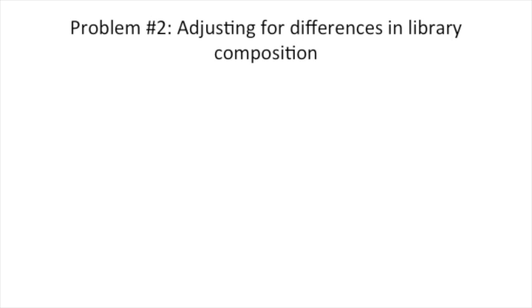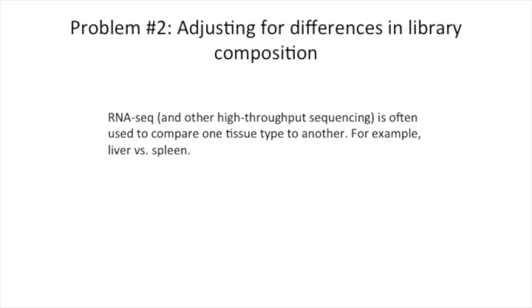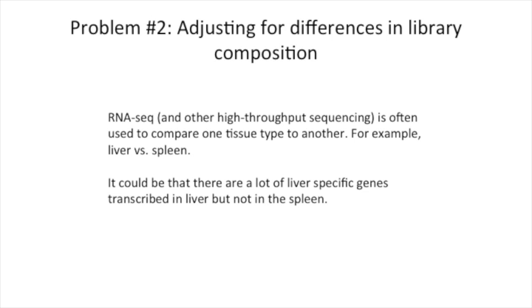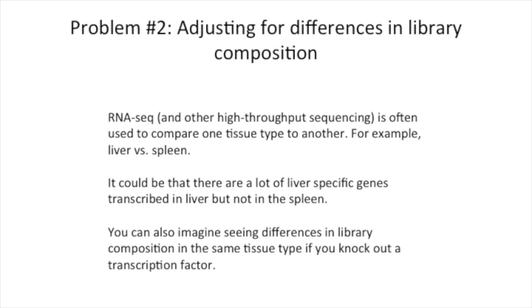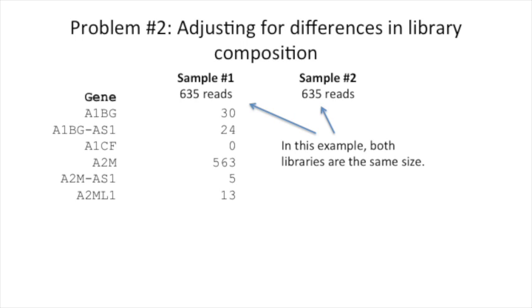Problem number two: adjusting for differences in library composition. RNA-seq, and other high-throughput sequencing, is often used to compare one tissue type to another, for example, liver versus spleen. It could be that there are a lot of liver-specific genes transcribed in the liver, but not in the spleen. This is an example of a difference in library composition. You can also imagine seeing differences in library composition in the same tissue type if you knock out a transcription factor or something that regulates gene transcription.